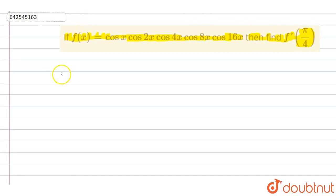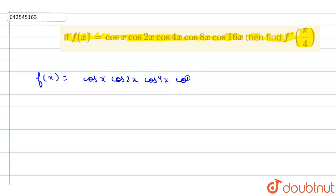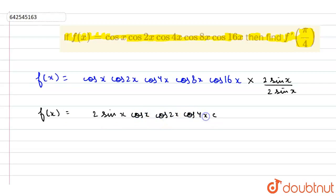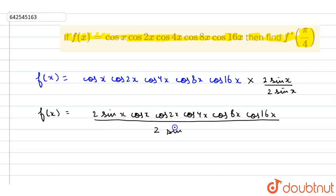Okay, so let us start. It is given that f(x) is equal to cos x · cos 2x · cos 4x · cos 8x · cos 16x. So let us multiply and divide by 2 sin x. This will be equal to f(x) = (2 sin x · cos x · cos 2x · cos 4x · cos 8x · cos 16x) / (2 sin x).